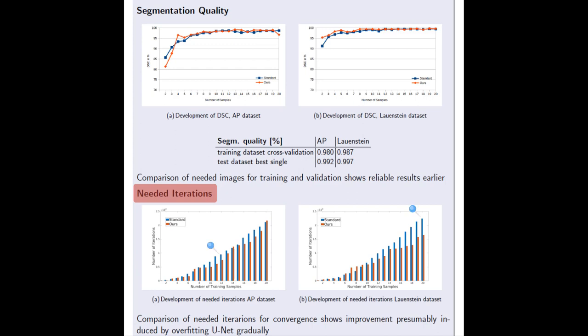For each number of images, our overfitting architecture needed less image iterations for convergence compared to the standard U-Net feeding.